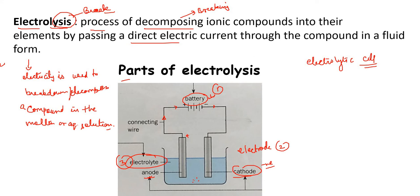Electrodes are of two types: cathode and anode. The anode acts as positive because it has fewer electrons; the cathode acts as negative because it has comparatively more electrons. Electrodes are the only part that conduct electricity in this setup. We use different types of electrodes based on requirements — inert electrodes that do not react with the electrolyte, or metal electrodes that can react with the electrolyte.